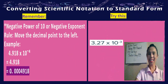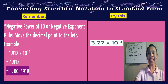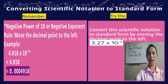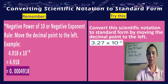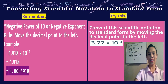Here is an example for you to try: 3.27 times 10 to the negative 3. Remember, when converting scientific notation to standard form with a negative exponent, you have to move the decimal point to the left. You can refer to the example I have given. I'm giving you 30 seconds — you're ready? You can now begin.